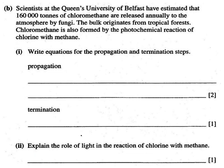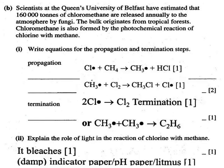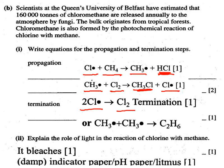Pause and have a go. Propagation reactions must have a radical on the left and a radical on the right. Termination reactions always involve a radical reacting with a radical to form a neutral product. Also explain the role of light. A typical propagation reaction: a chlorine radical formed in the initiation step collides with a neutral methane molecule, creating HCl plus a methyl radical. Or the methyl radical hits a chlorine molecule to form chloromethane and a chlorine radical. Termination: two chlorine radicals combine to form a chlorine molecule, or two methyl radicals combine to form ethane.